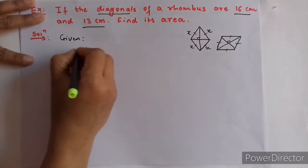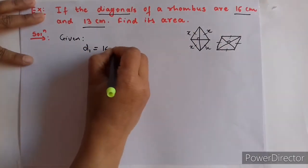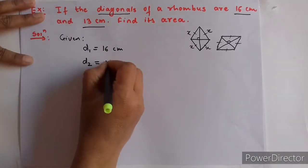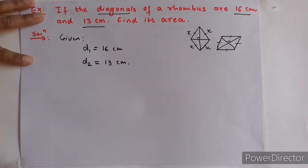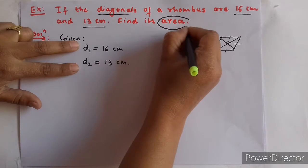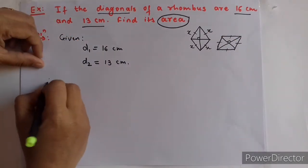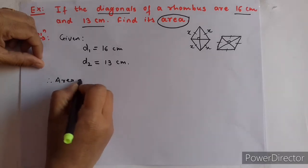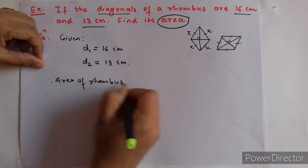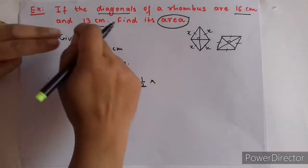Given: Diagonal 1, D1 = 16 cm. Diagonal 2, D2 = 13 cm. Since both diagonals are given, the formula we use is: therefore, area of rhombus equals half into the product of diagonals.